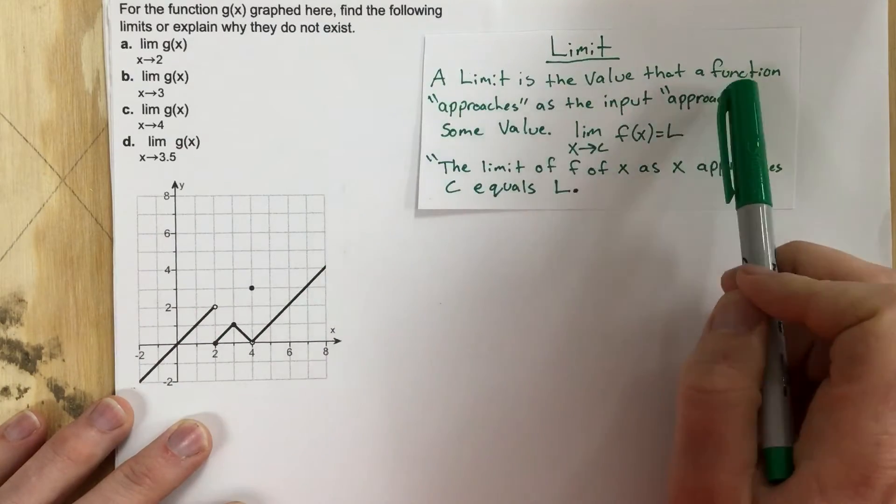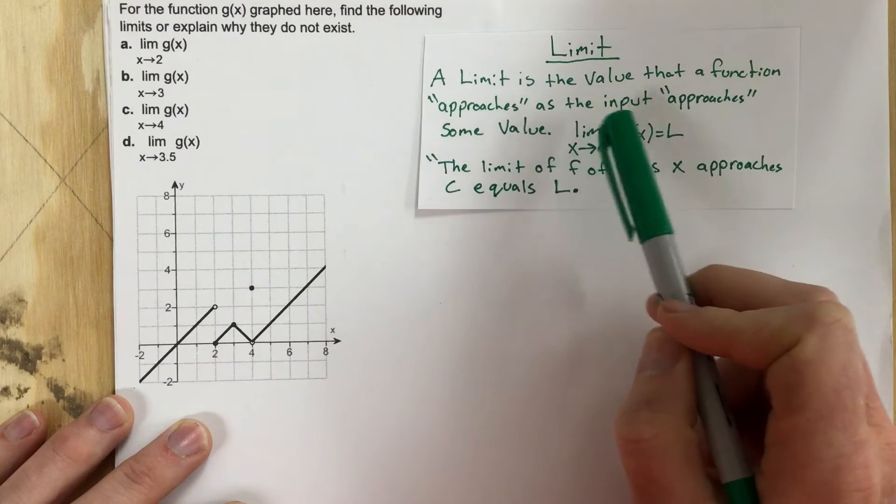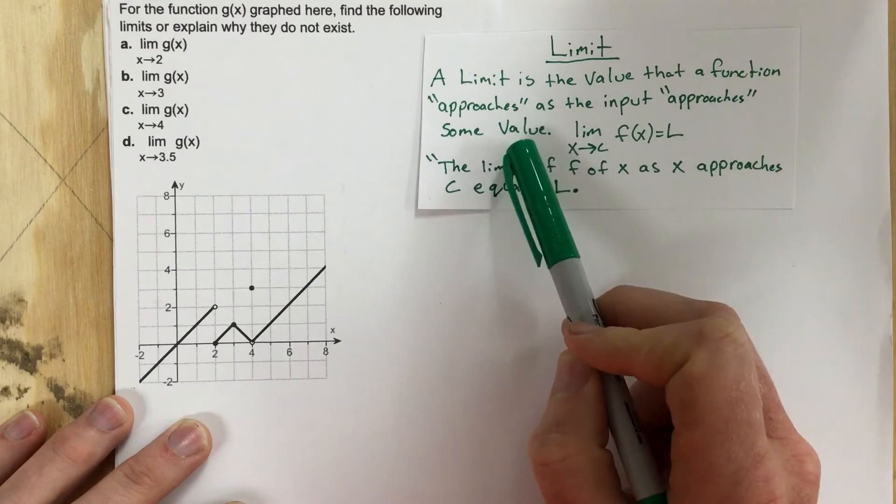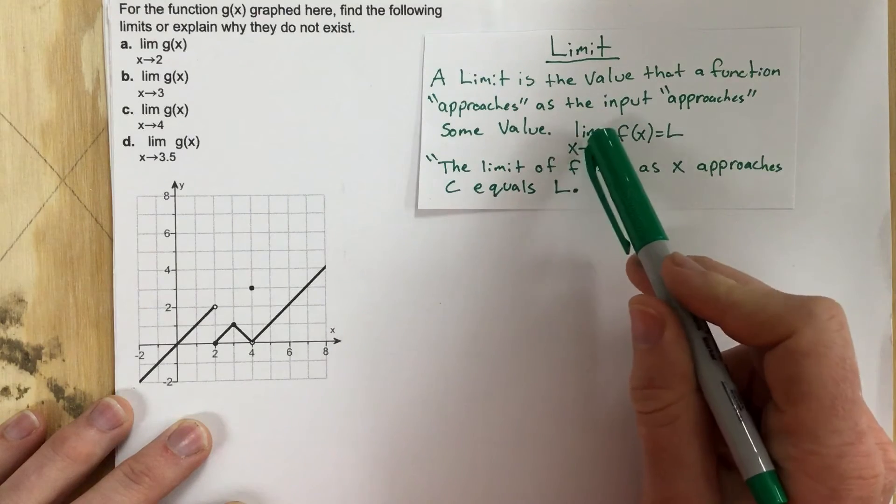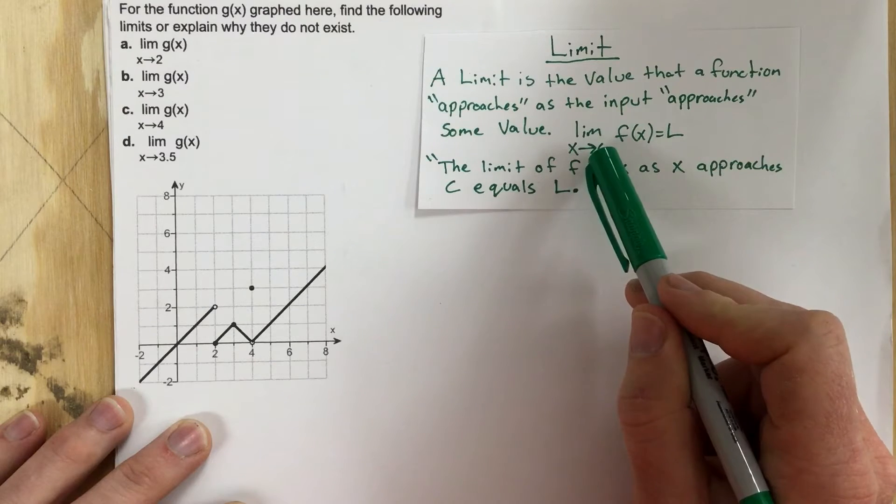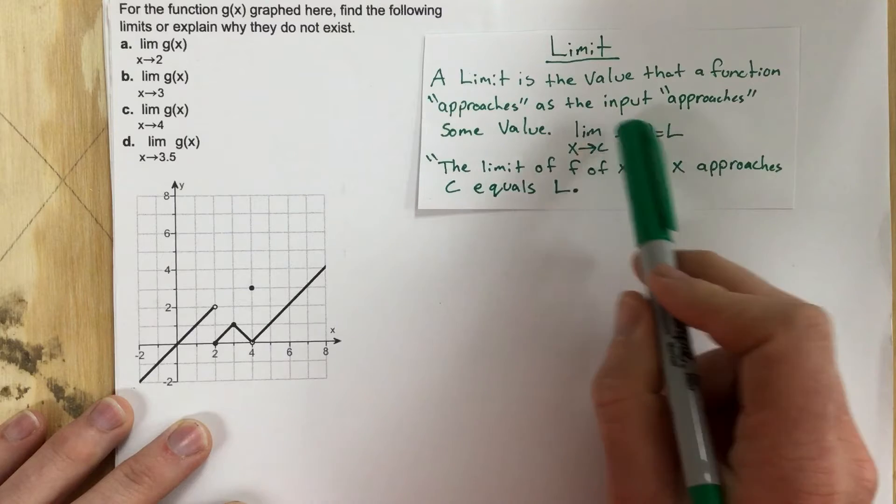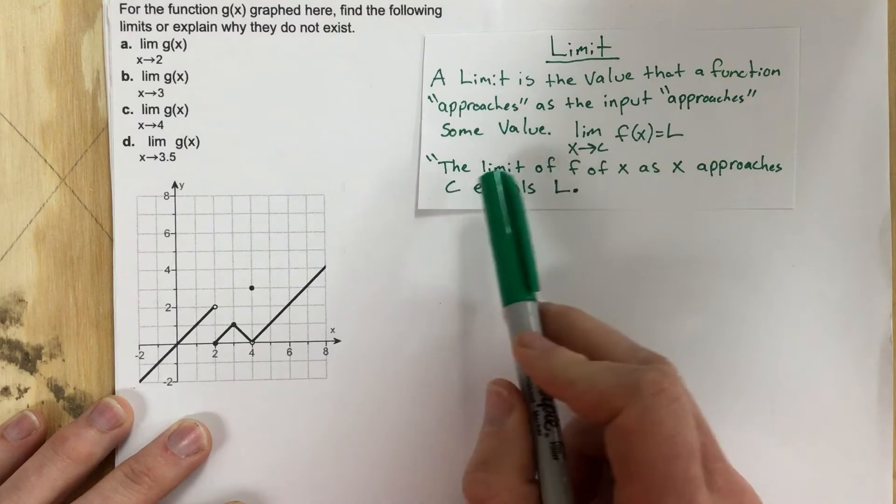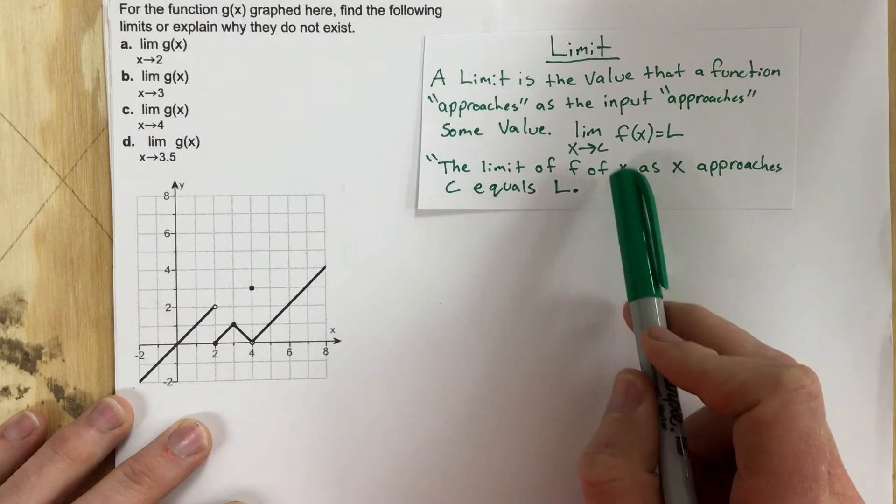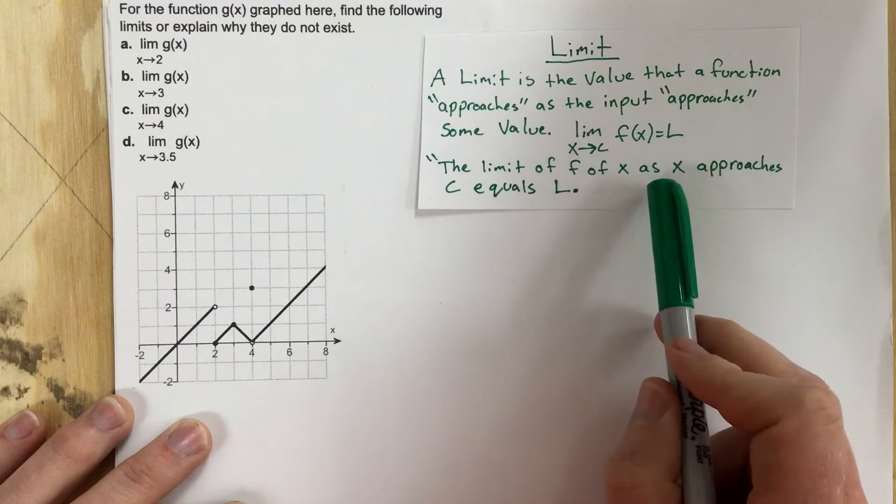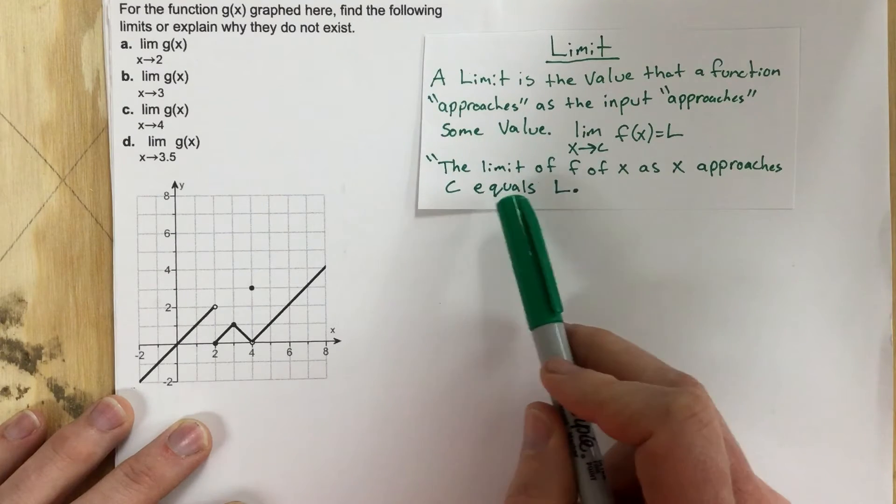A limit is the value that a function approaches as the input approaches some value. It's written as limit as x approaches c of f of x equals L. So you would say this as the limit of f of x as x approaches c equals L.